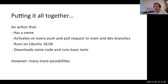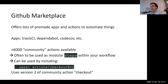Putting all this together, you have an action with a name, it activates on events you specify — in this case every push and pull request to the main and dev branches — the jobs run on Ubuntu, and the action downloads some code and runs basic tests. There are many more possibilities. The nice thing about actions is the GitHub Marketplace, which has a lot of pre-made apps and actions, including over 6,000 community actions available.